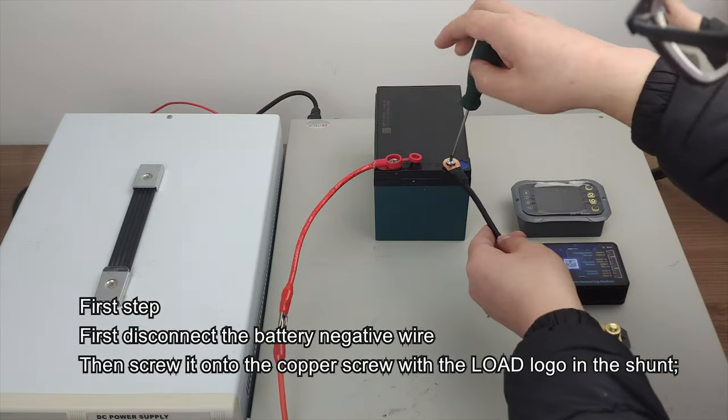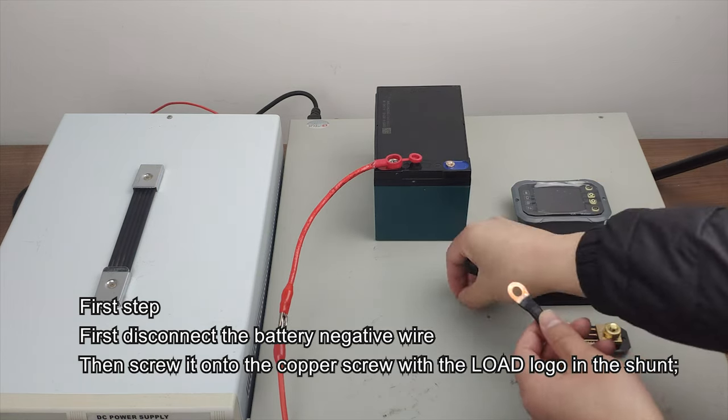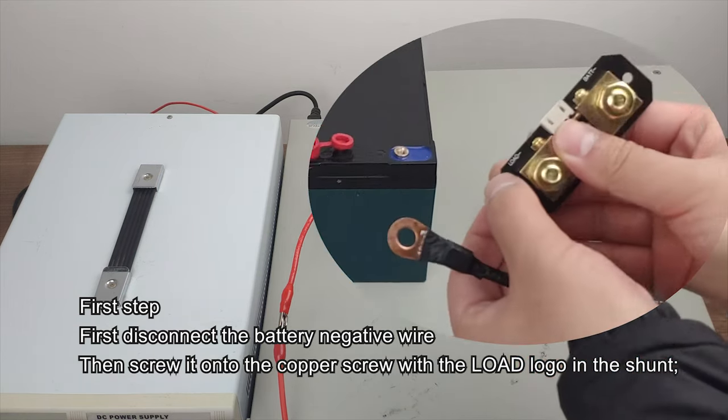First step: First disconnect the battery negative wire, then screw it onto the copper screw with the load logo in the shunt.